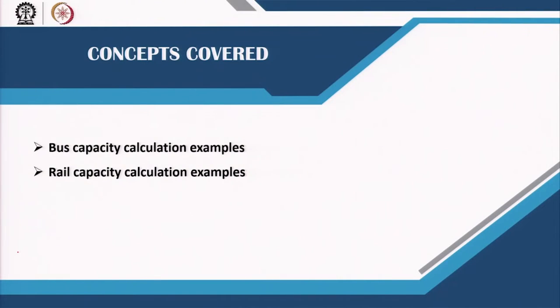Welcome back friends. In the previous lecture, we introduced you to the various concepts in capacity and speed calculations of bus and rail transit. In this lecture, what we are going to do is show you some solved examples of capacity of rail and bus transport, so that this will help you understand those theoretical concepts already learned. We are going to give you one example each of how to determine bus capacity and rail capacity, and mostly what you will see are empirical formulas used in calculating these problems.